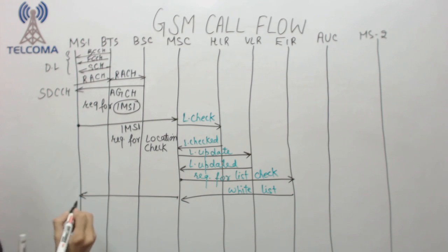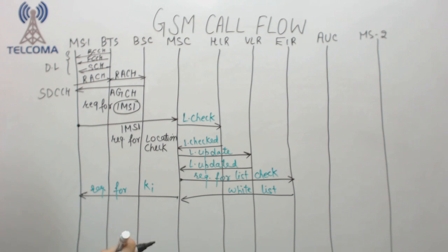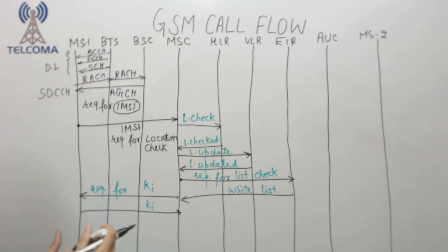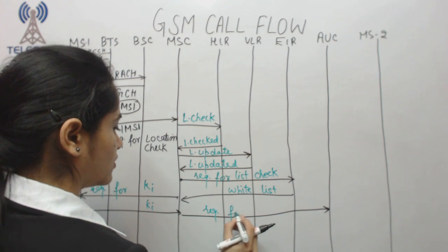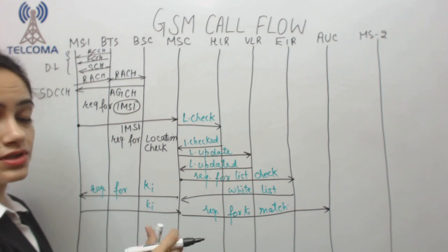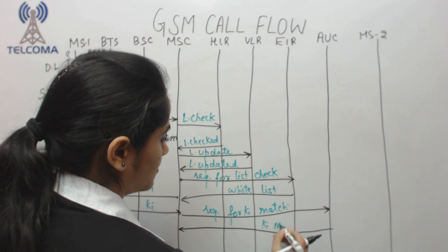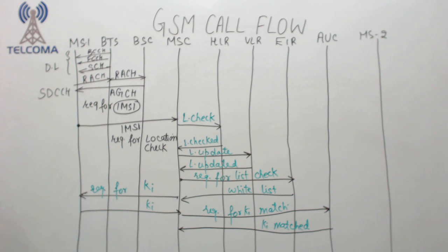After the EIR check, the MSC communicates with the mobile station requesting the Ki — the authentication key stored in the SIM card. The mobile station sends the Ki, which is forwarded to the Authentication Center (AuC). The AuC matches the Ki against its database and sends back a confirmation that the key is matched. With this, the signaling process is completed.